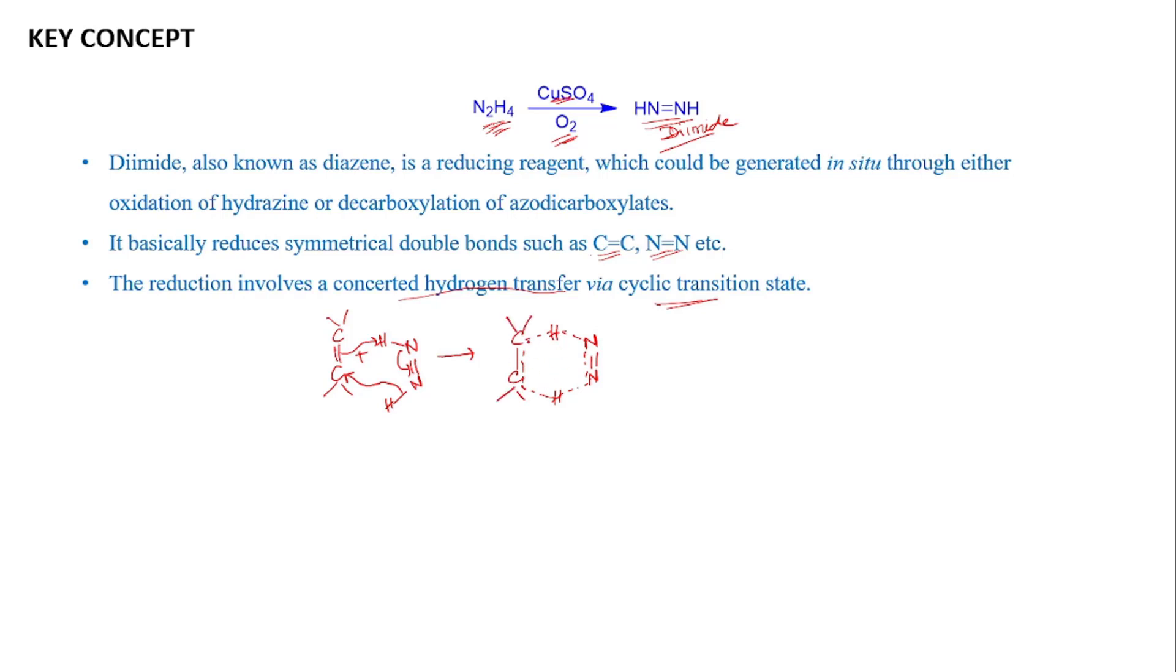This is the six-membered cyclic transition state. From here, we will get the hydrogenated product like this. And we will get this N=N. This is basically nitrogen. In this hydrogenation process, we will always get nitrogen as a byproduct.